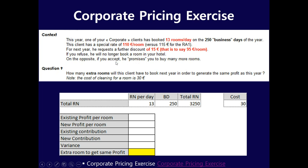They are trying to reduce the rate from 110 to 95 euro per room. If you refuse, they will no longer book rooms at your hotel. On the other hand, if you accept, they promise to book many more rooms. The question is: how many extra rooms will this client have to book next year to generate the same profit as this year? Note — it's profit, not revenue.